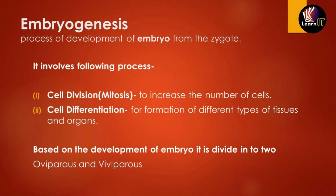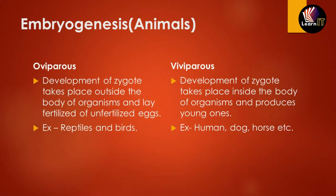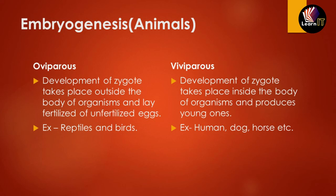Based on where embryo development occurs, embryogenesis in animals is divided into two types. Oviparous organisms develop the zygote outside the body — they lay fertilized or unfertilized eggs; examples include reptiles and birds. Viviparous organisms develop the zygote entirely inside the female body and give birth to young ones; examples include humans, dogs, and horses.